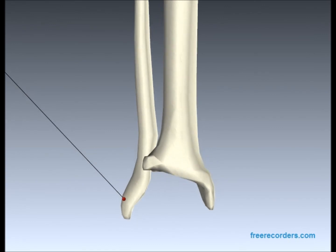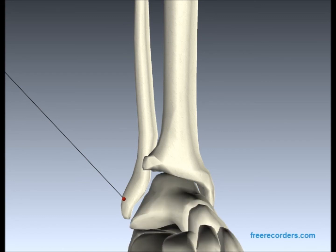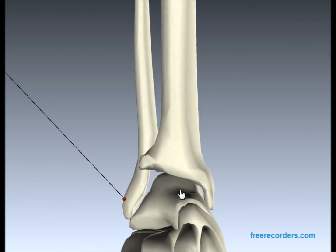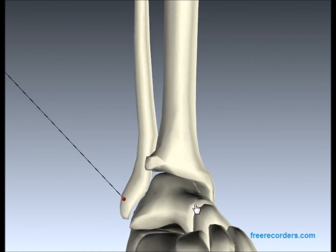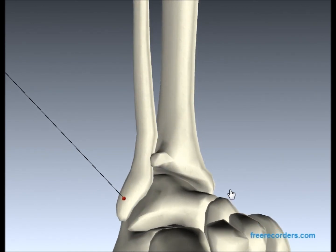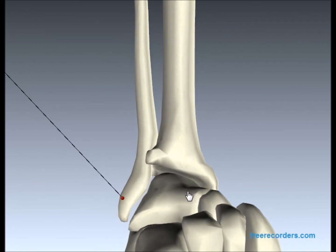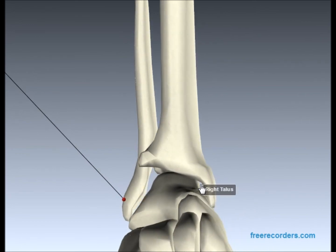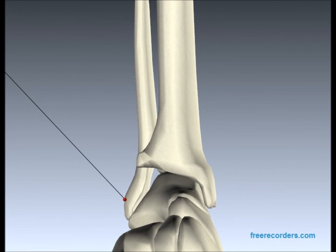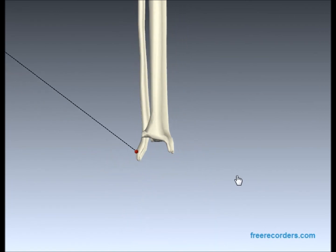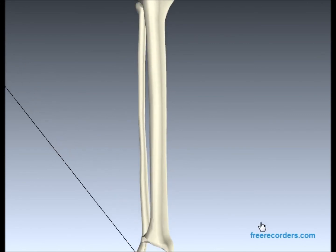This region here forms the ankle joint. If I hop on the bones of the foot, you'll be able to see the ankle joint. There's the talus, which is the main ankle joint bone, and this joins with the tibia and fibula to form the ankle joint. And there we are — that's the tibia and fibula.